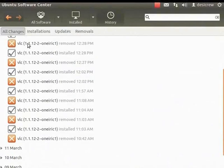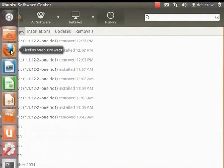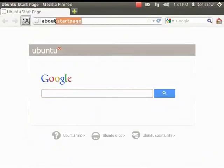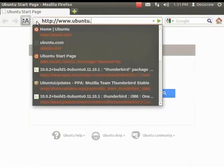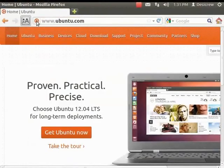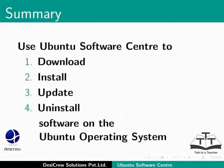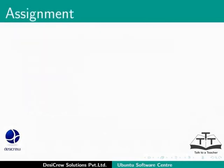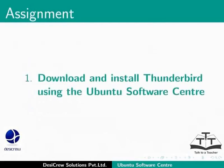You can also update the installed software on a regular basis. You can find more information about Ubuntu and the Ubuntu Software Center on the Ubuntu website. This brings us to the end of this tutorial on Ubuntu Software Center. We learned how to download, install, update and uninstall software on Ubuntu. Here is an assignment: download and install Thunderbird using the Ubuntu Software Center.